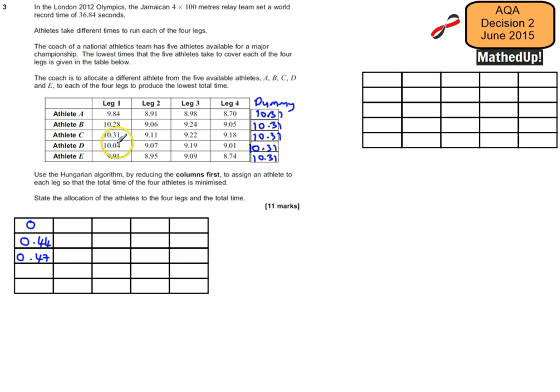I can then do the same thing for my second leg over here. So this time my lowest value is 8.91. So I'm going to subtract that from each element here. So that's going to be 0 and then we've got 0.15 and then that's going to be 0.2. And then we've got 0.16 and then 0.04.